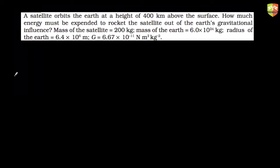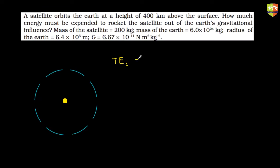Anyone else got the answer? You have to use the concept of energy only, nothing else. The initial energy is whatever is at that orbit. The final potential energy becomes zero when it leaves the earth's influence, and since it just reaches infinity the final kinetic energy is also zero. Total orbital energy is −GMm/(2r). Finally the total energy should equal zero, so the change in total energy is what's required.